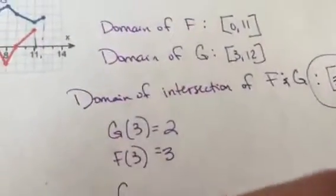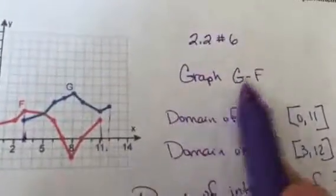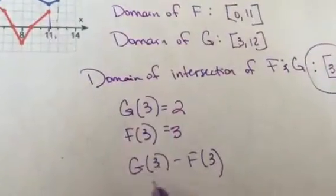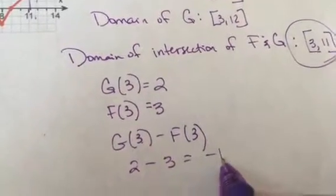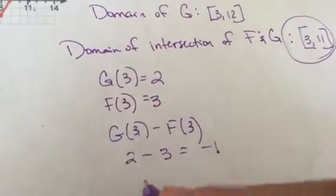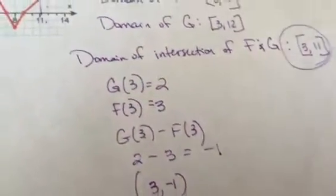So notice that therefore, g of 3 minus f of 3, because that's what we want to do is g minus f. Well, g of 3 is 2, f of 3 is 3. So that gives me negative 1. So what I have is the point (3, negative 1). That's one of the points on my graph.